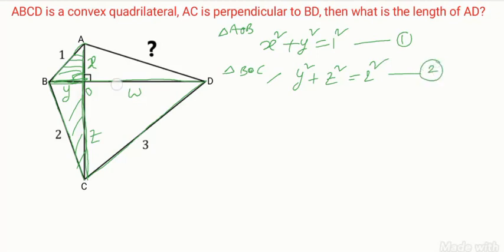Now this triangle, that is triangle COD, same Pythagorean rule. Z square plus W square is equal to 3 square. This is equation 3.